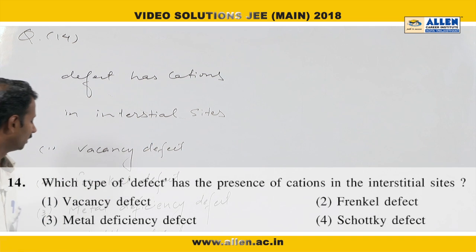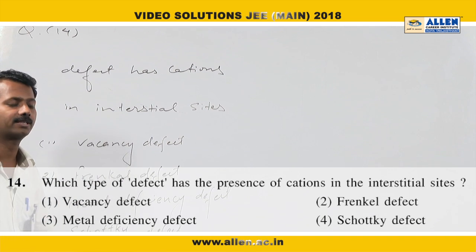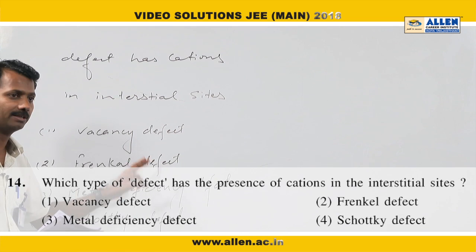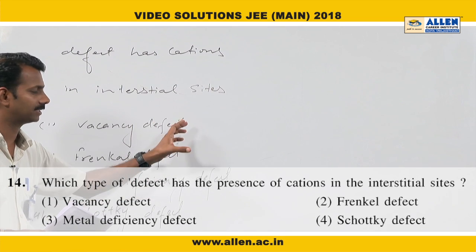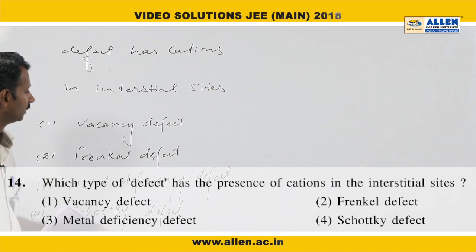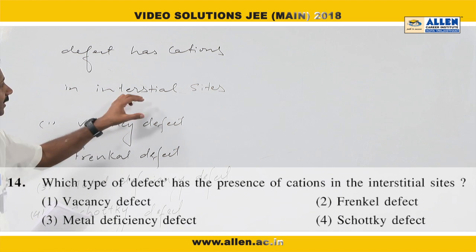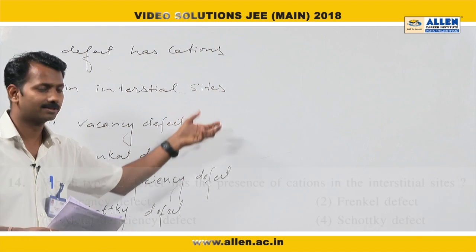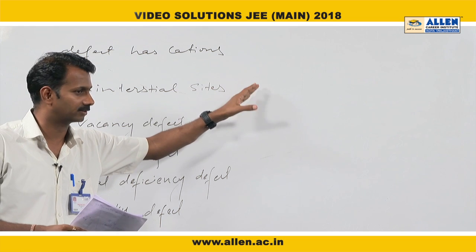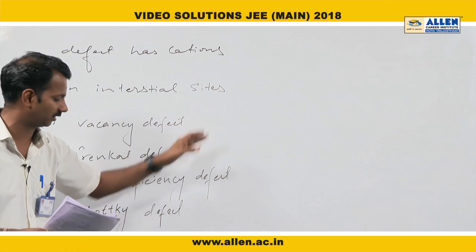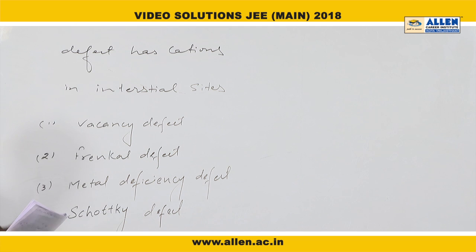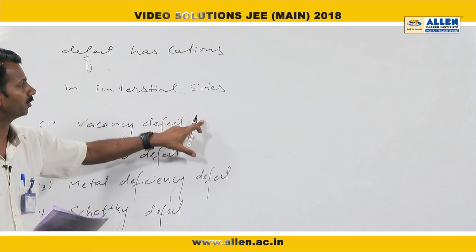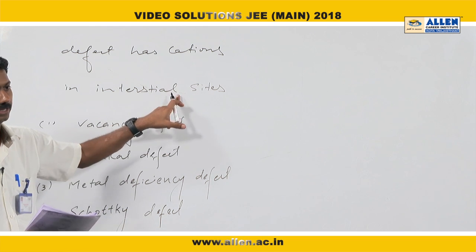Question number 14: which type of defect has a cation present in interstitial voids? In Schottky defect, both positive and negative ions leave the crystal. But the defect in which a cation moves to an interstitial site is called Frenkel defect. In Frenkel defect, on slight heating, cations leave their original position and move into interstitial voids. So the answer is Frenkel defect.